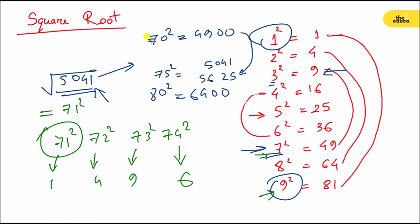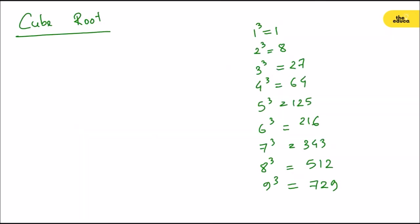So this is the square root method. And I will tell you about the cube root. What's one cube — 1, two cube — 8, three cube — 27, four cube — 4, five cube — 5, six cube — 6, seven cube — 3, eight cube — 2, and nine cube — 9.